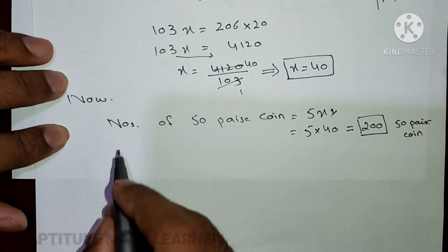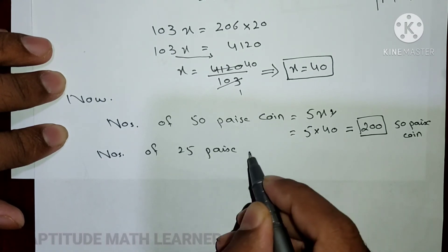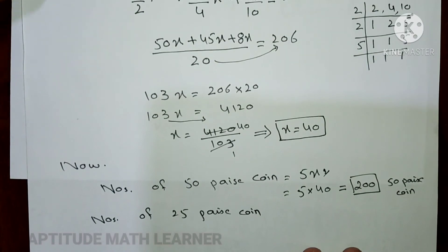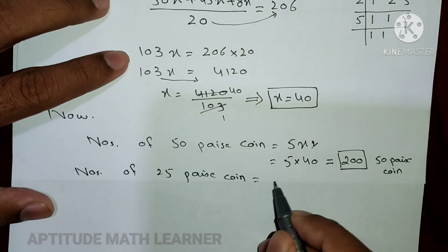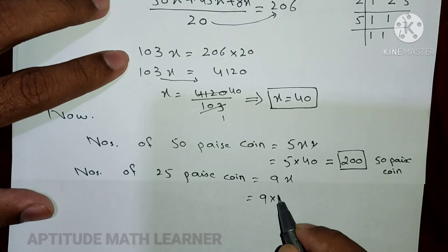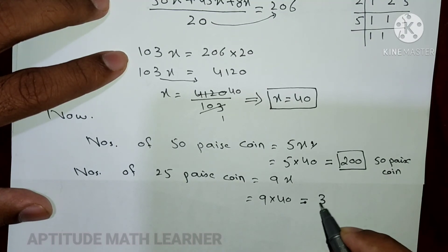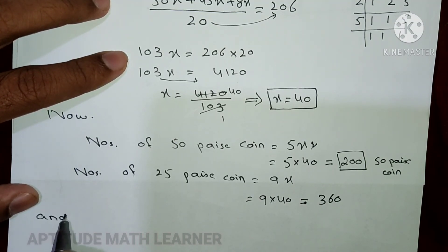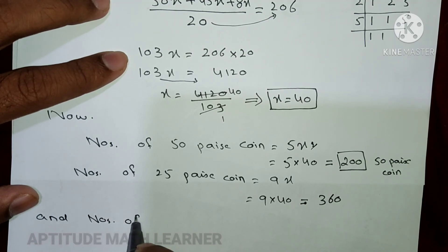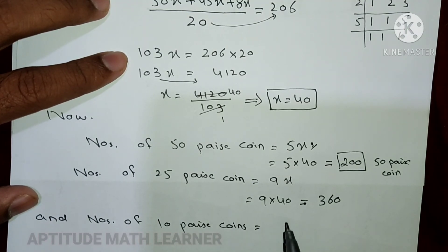Number of 25 paisa coins = 9x = 9 × 40 = 360.